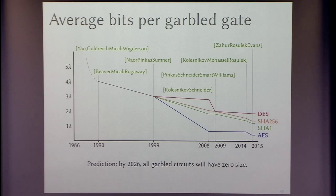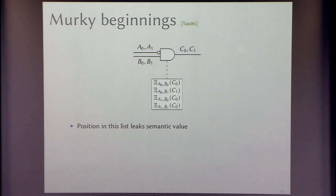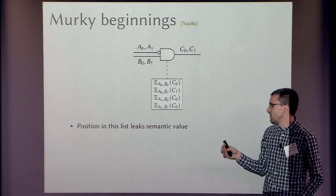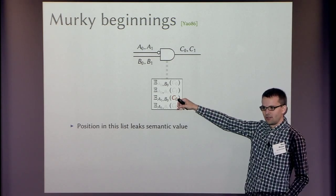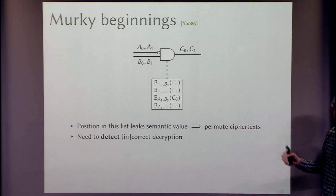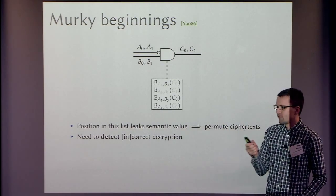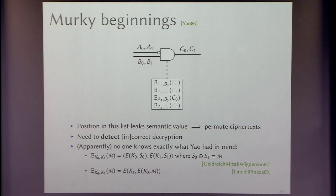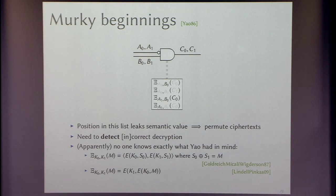One thing I glossed over earlier: I didn't talk about the position of ciphertexts within the four ciphertexts. The relative position leaks information — if you open the third ciphertext, you know something about that gate. In the classical construction, we have to permute these four ciphertexts, meaning when you evaluate, you have to trial-decrypt all four and identify when you've decrypted successfully. I couldn't find that anyone knew what Yao had in mind for this — it was a theoretical construction.